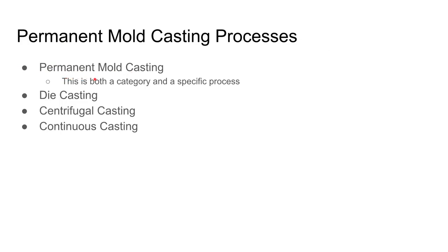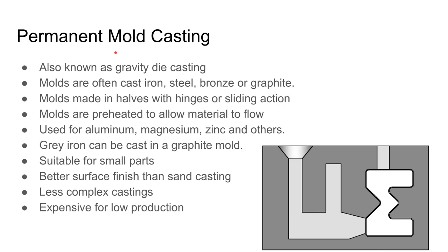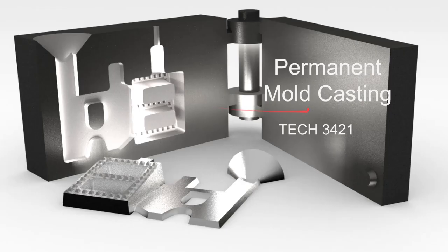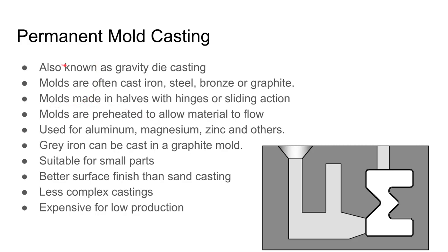The specific permanent mold casting process is also called gravity die casting, which can be confusing because there's also a process simply called die casting, sometimes called pressure die casting to make a distinction. The broader category includes die casting, centrifugal casting, continuous casting, and the specific process called permanent mold casting.